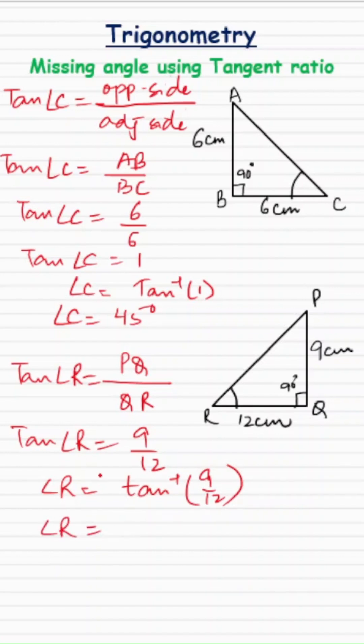When you put it in the scientific calculator, the value of angle R would come out to be approximately 36.86 degrees, or you can say that angle R is approximately 36.9 degrees.